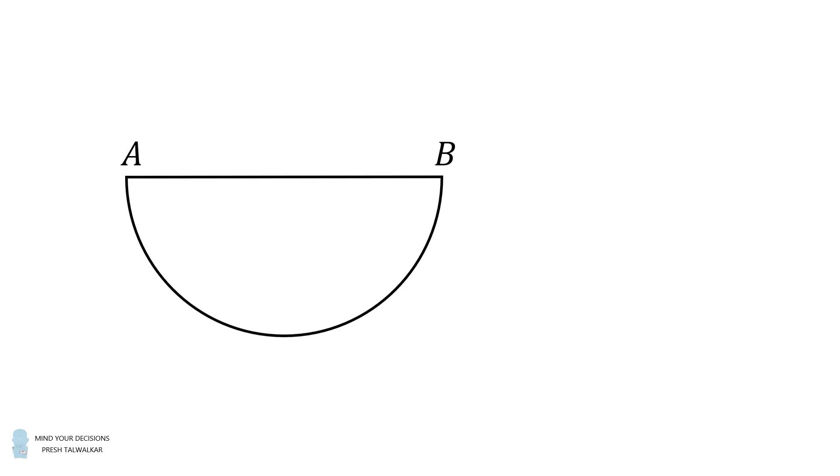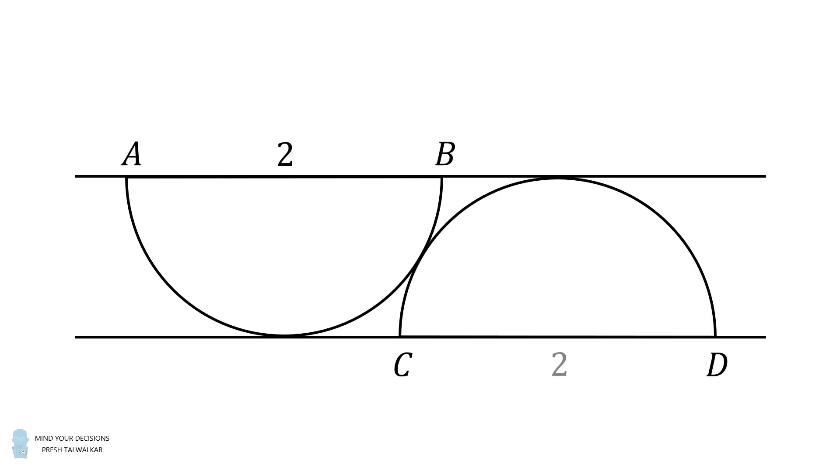Start with semicircle AB and flip it upside down so that semicircle CD is tangent to semicircle AB. The two semicircles are also positioned such that the line through AB is tangent to the semicircle CD, and the line through CD is exactly tangent to the semicircle AB. If each semicircle has a diameter equal to 2, what is the length of AD equal to?